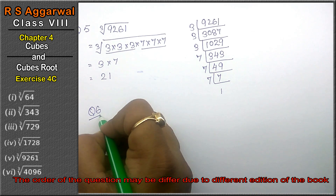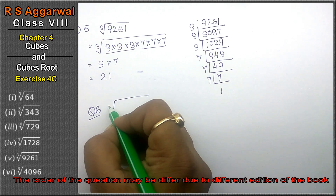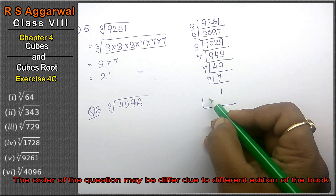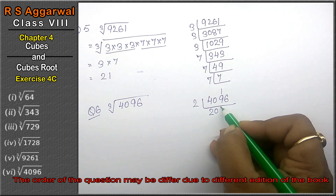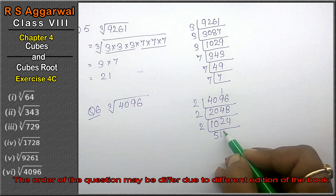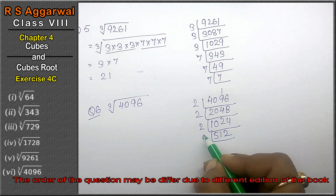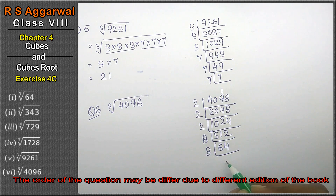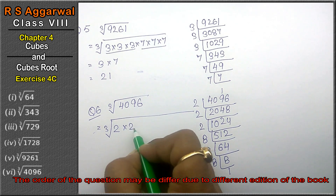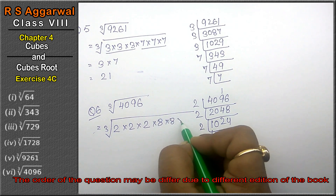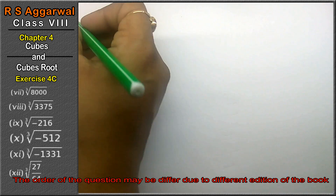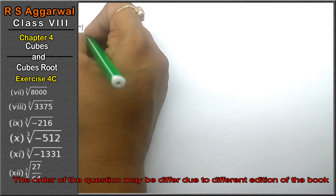Let's do question number 6 of Exercise 4C. Question number 6 is cube root of 4096. We find the prime factorization of 4096. Dividing by 2 repeatedly: 4096→2048→1024→512→256→128→64→32→16→8→4→2→1. We know 8×8×8=512 and 8 is 2³, so 4096 = 2¹²= (2×2×2)×(2×2×2)×(2×2×2)×(2×2×2). Making pairs of 3, we get 2×2 = 4, and 4×4=16. So 16 is the answer.